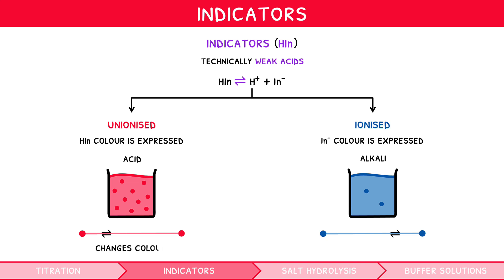Every indicator changes color over a range of roughly two pHs, known as its pH range. The midpoint of this range is always equal to the value of pKa for the indicator.